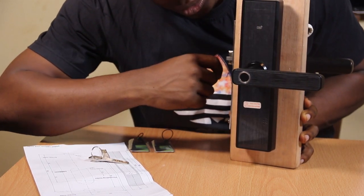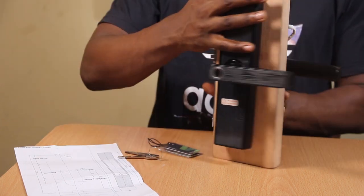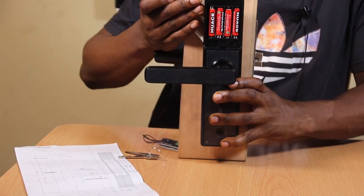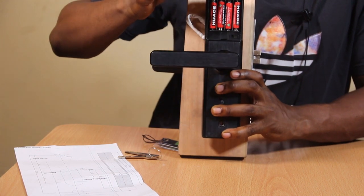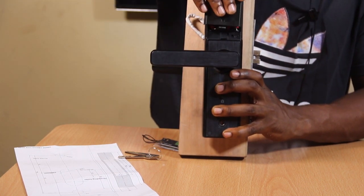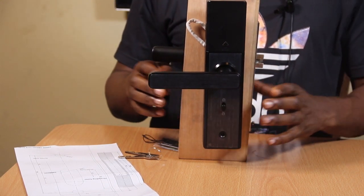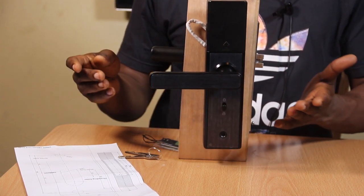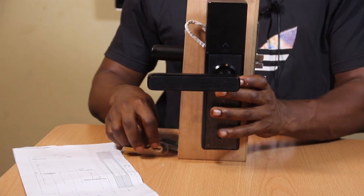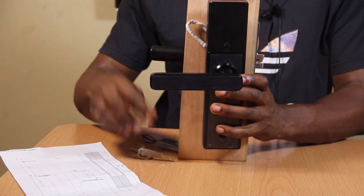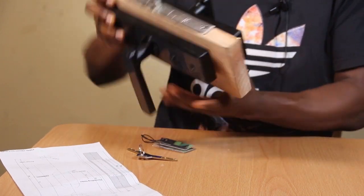At the back it has a battery pack, so you load this with triple A batteries and it runs on it. So in case your battery dies down when you're out of the house, you can use the mechanical key to open, but it also has an Android port.